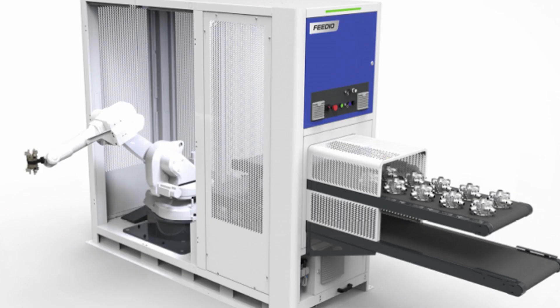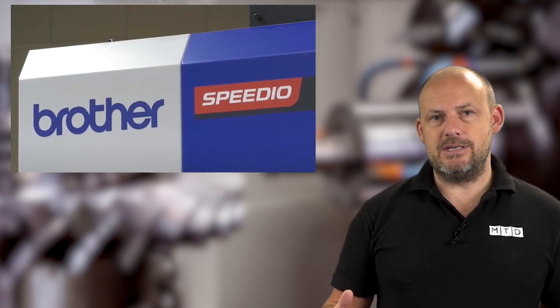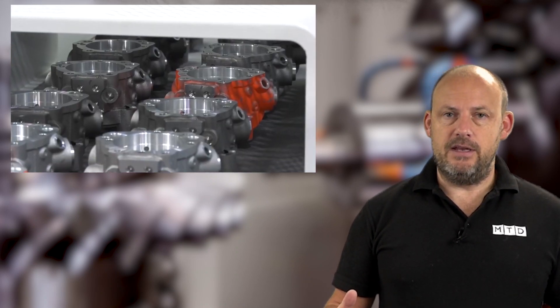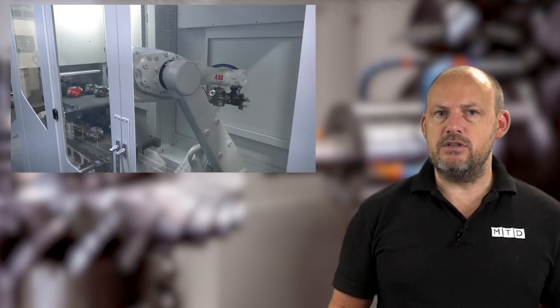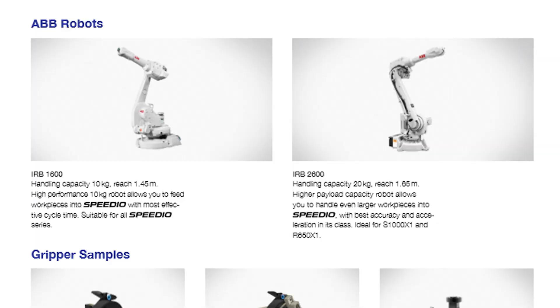Now, what about the robot itself and the payload? You can pick up up to 20 kilograms using this ABB solution, this Speedio solution. There are options, so you need to talk to White House Machine Tools, who are the suppliers of this product, about those.